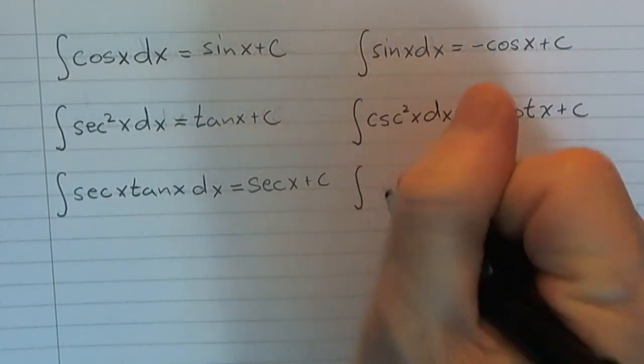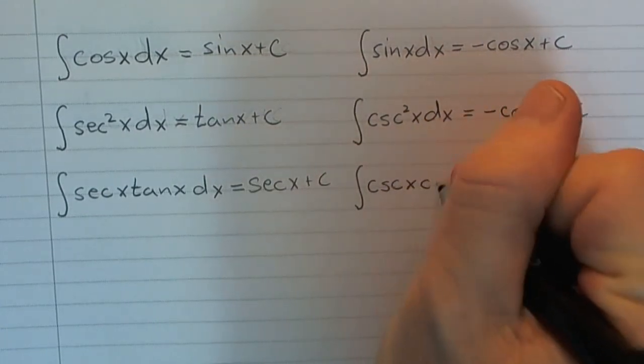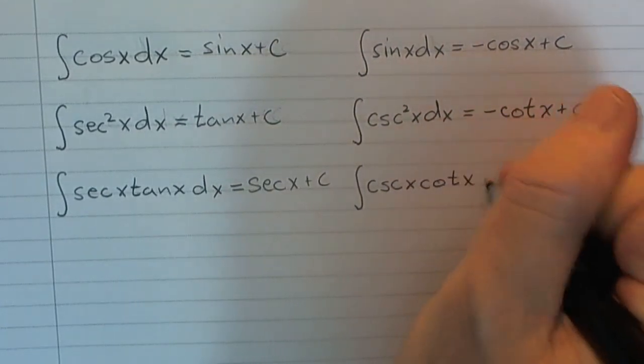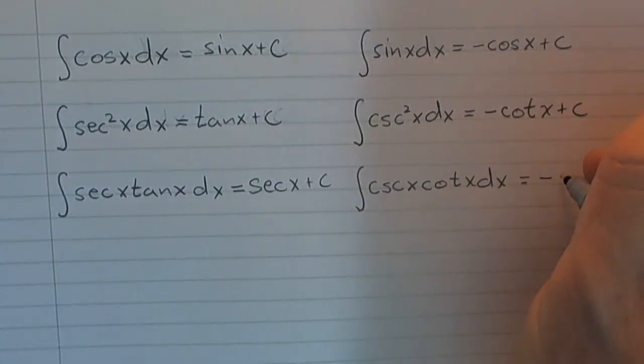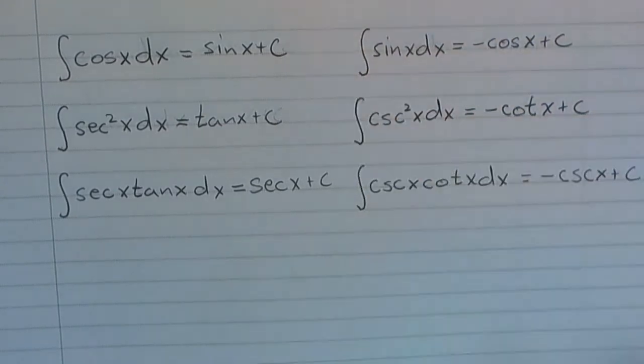And then we could say, what about cosecant x cotangent x? Well, that would be negative cosecant, like that.